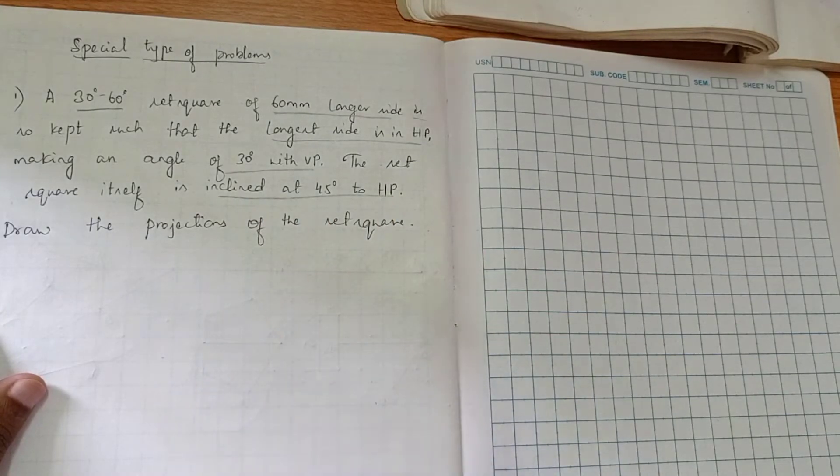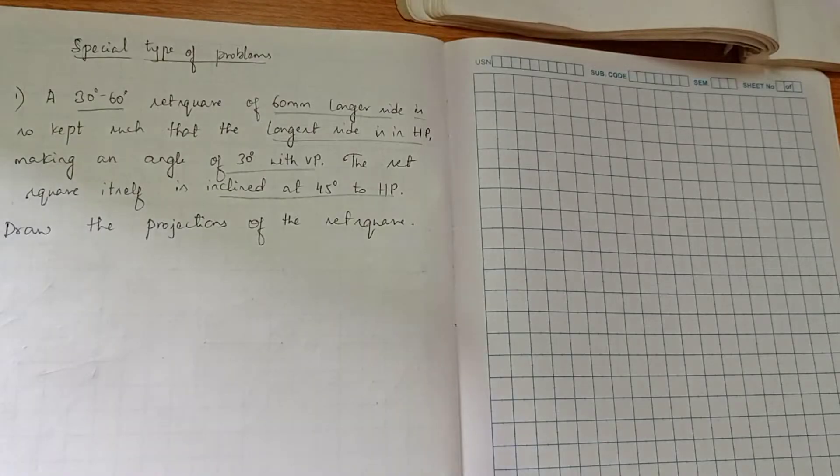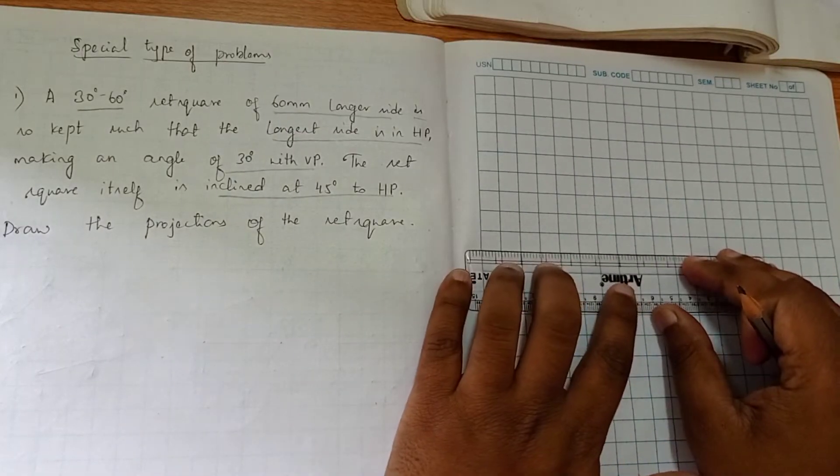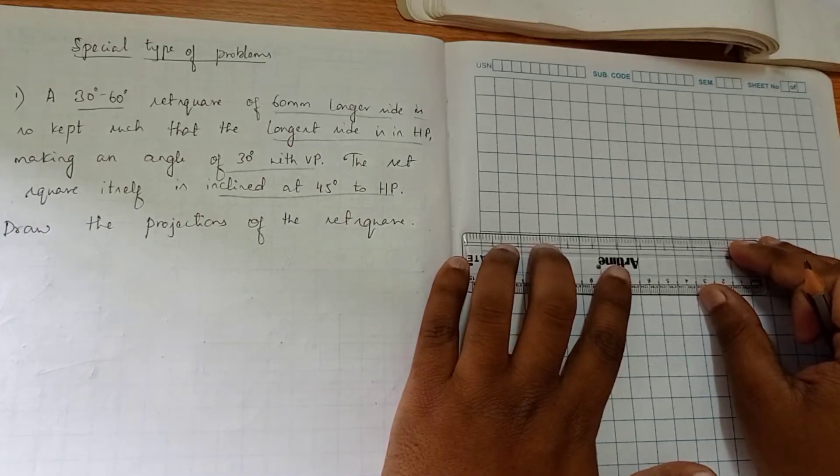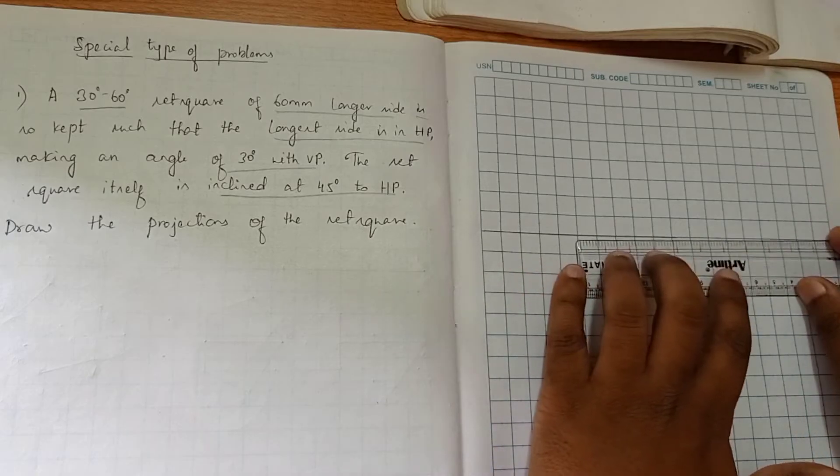So we have to draw the set square. The main thing in this problem is we have to construct a set square - that's it. Other than that, it will be similar to your normal type of problem. So I'll be showing how to construct a set square here. The problem is easy, the only thing here is we have to construct a set square.